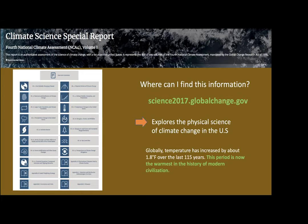Volume one is more of a continental scale, whereas volume two scales down into more regions, giving you a little bit more specificity. If you want a big picture of what's happening, you can go to volume one.